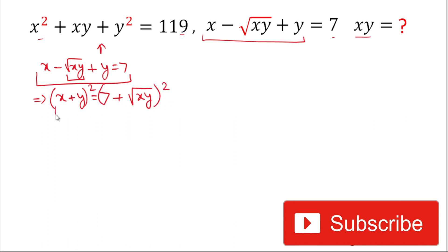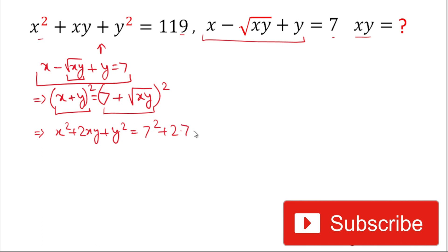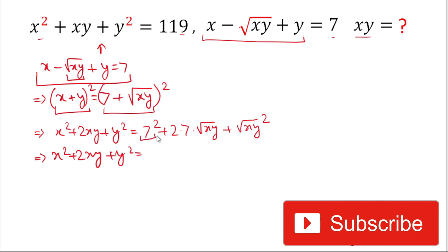The left hand side is in the form of (a + b)², so we can write it as x² + 2xy + y². The right hand side is also in the form of (a + b)², so it will be 7² + 2 × 7 × √(xy) + (√(xy))². Simplifying: x² + 2xy + y² = 49 + 14√(xy) + xy, since the square and square root cancel.